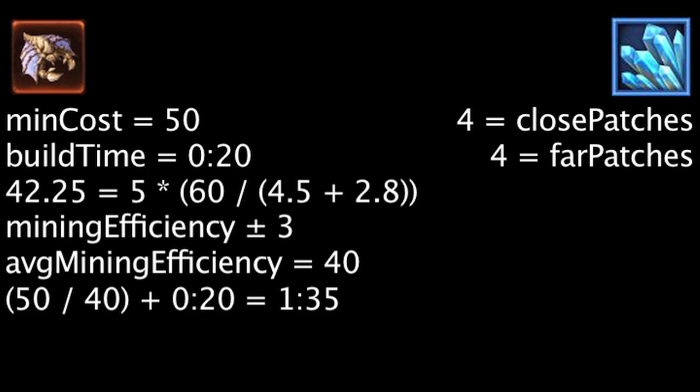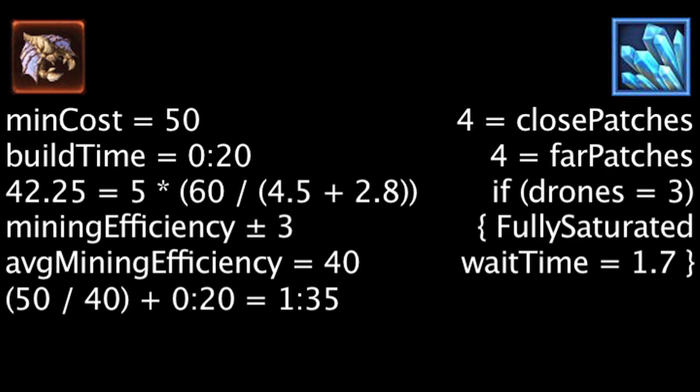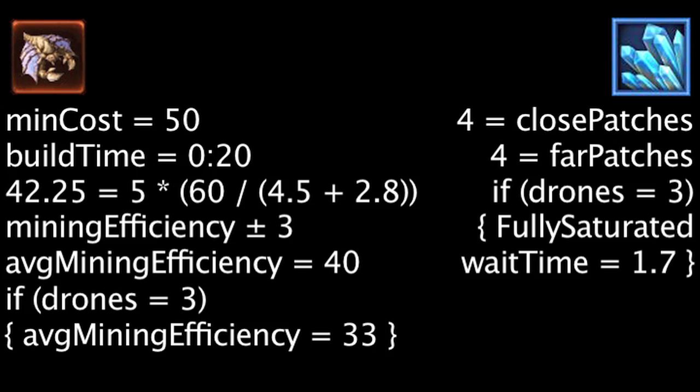Drones work at maximum efficiency when two drones are set to the same patch. A mineral patch is considered fully saturated with a third drone, which adds a wait time of about 1.7 seconds depending on distance. After multiple mining tests, the average efficiency for each drone on a fully saturated patch was 33 minerals per minute, or about 100 minerals per minute per patch.